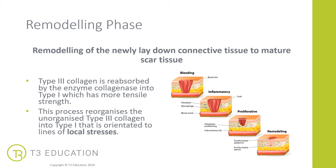The next phase is the remodeling phase, which is all about remodeling the newly laid down connective tissue into mature scar tissue. The type 3 collagen — the weaker collagen initially laid down — is reabsorbed by the enzyme collagenase, which then turns it into type 1 collagen, which has a lot more tensile strength. Type 3 collagen is also really disorganized, so this process helps reorganize it into type 1 collagen, which is then orientated to the lines of local or mechanical stresses, depending on how that person moves or doesn't move.